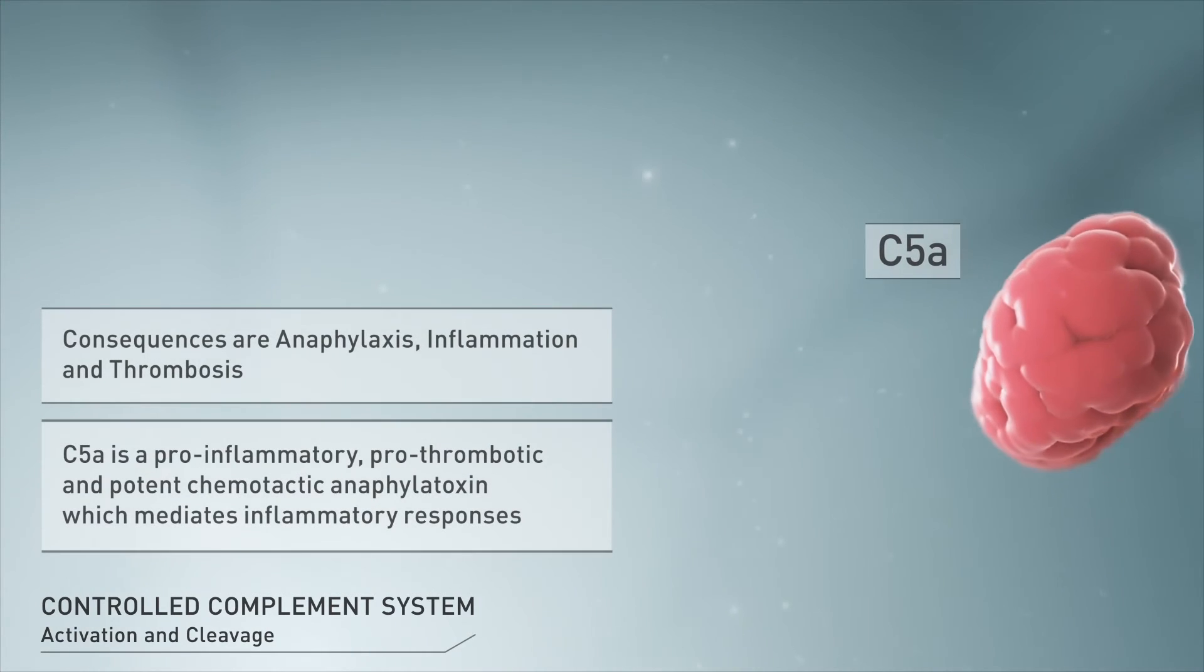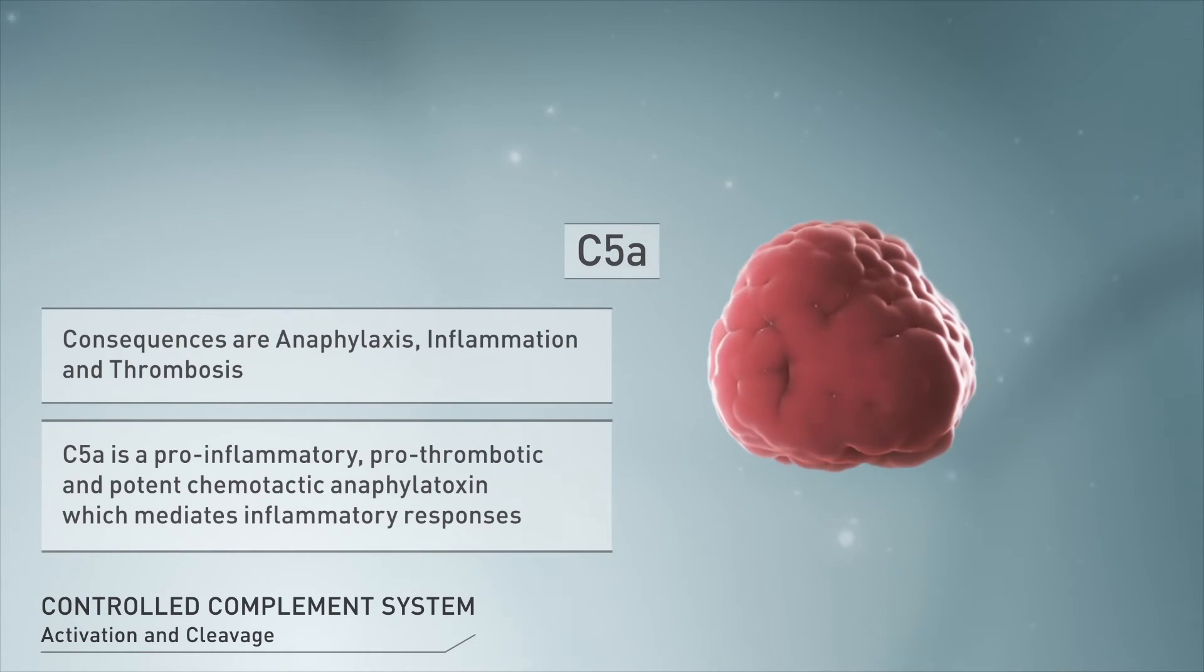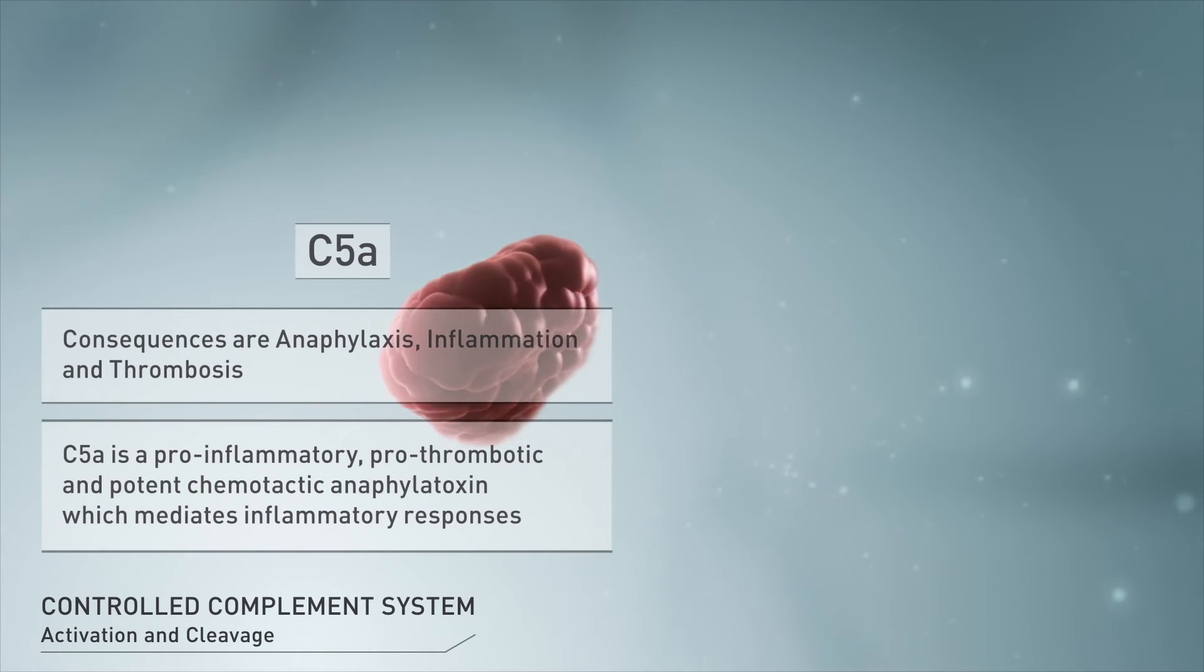C5A is a pro-inflammatory, prothrombotic and potent chemotactic anaphylatoxin, which mediates inflammatory responses by stimulating neutrophils and phagocytes.